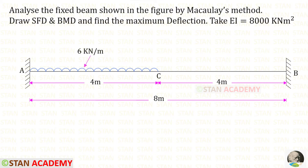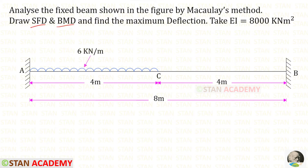Hello everyone. Today we are going to analyze a fixed beam using Macaulay's method. We have to draw the shear force diagram and the bending moment diagram, then find the maximum deflection. EI is given as 8000 kilo Newton meter square.